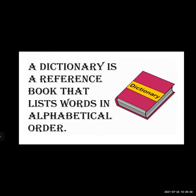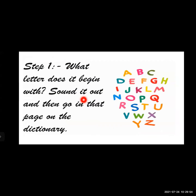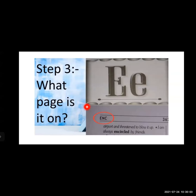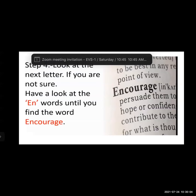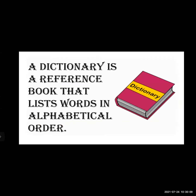So, the steps to find difficult words in the dictionary are: first, pronounce the word and identify which letter it starts with; second, search for that letter and go to that page; and last, find the next letter after the main first letter to locate the word. Now let's see the definition of dictionary.